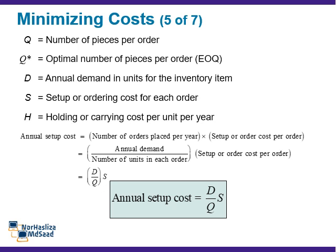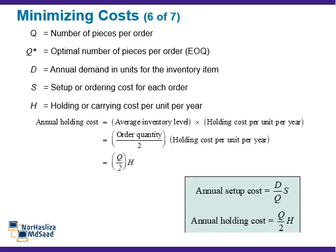Using the following variables, we can determine setup and holding costs and solve for the optimal number of units per order. Annual setup cost equals the number of orders placed per year multiplied by the setup or order cost per order.